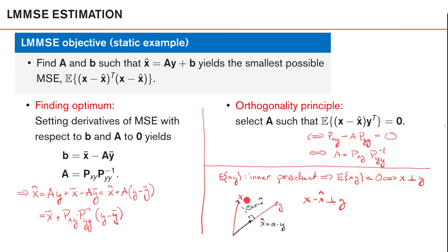For our random variables, this means we should find an estimate such that the expected value of the error times the observation is zero — that is, the expected value of (X minus x-hat) times the observation equals zero. If you like this vector illustration and are curious why the expression for A looks like it does: P_XY is the inner product between X and Y, and P_YY is the inner product of Y with Y, which is simply the length squared of Y.